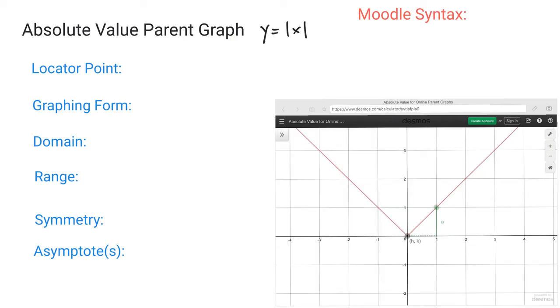This video we're going to take a look at the absolute value parent graph. A key thing to look at when you're looking at absolute value is the big V that it creates, because an absolute value makes everything that's inside it positive.